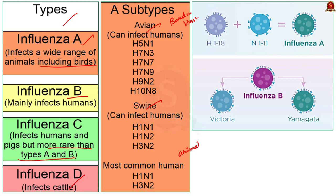For example, avian influenza — otherwise called bird flu — has subtypes such as H5N1 and H9N2. There is also swine influenza, also called swine flu, which has subtypes such as H1N1 and H3N2.